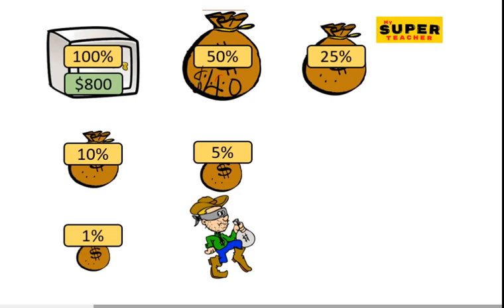Then 25% is a quarter, and that's 800 divided by 4. That's $200.